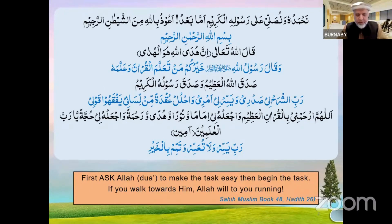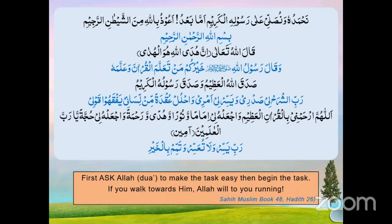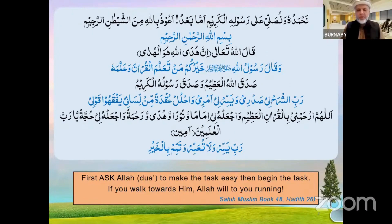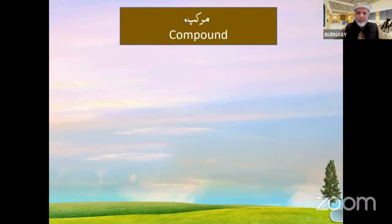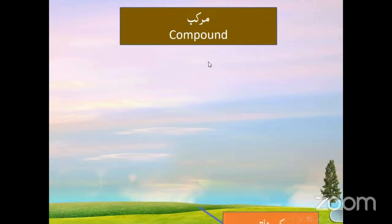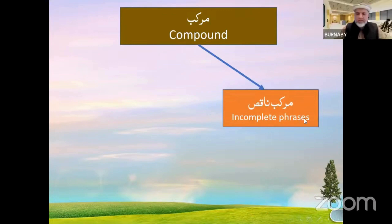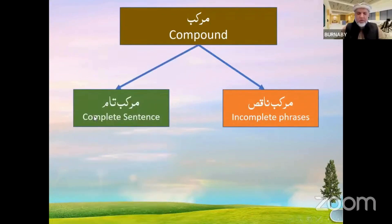Bismillah ir-rahman ir-rahim. Let's review this information one more time. We are dealing with murakab — a compound which is a combination of two or more words. There is murakab nakhis, which is incomplete phrases, and then there is murakab tam, which is the complete sentence.